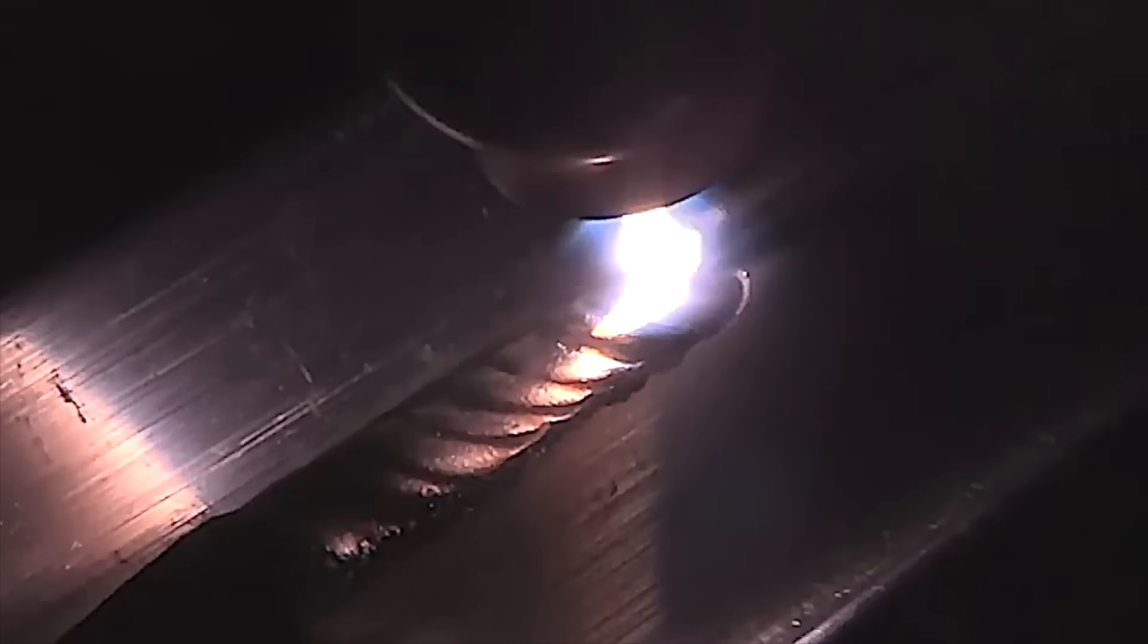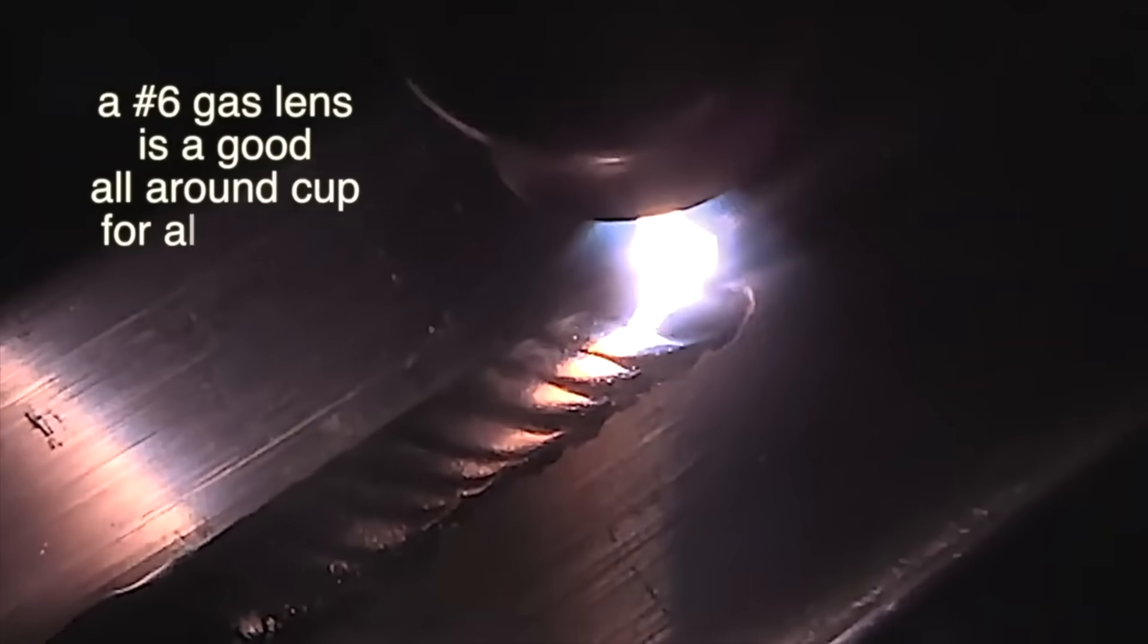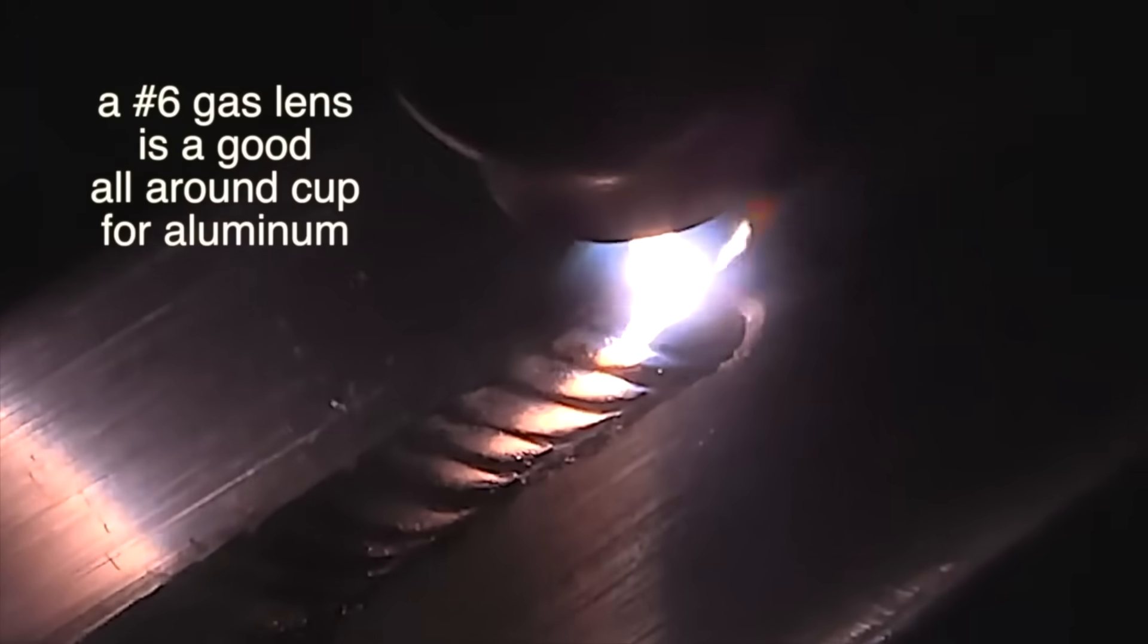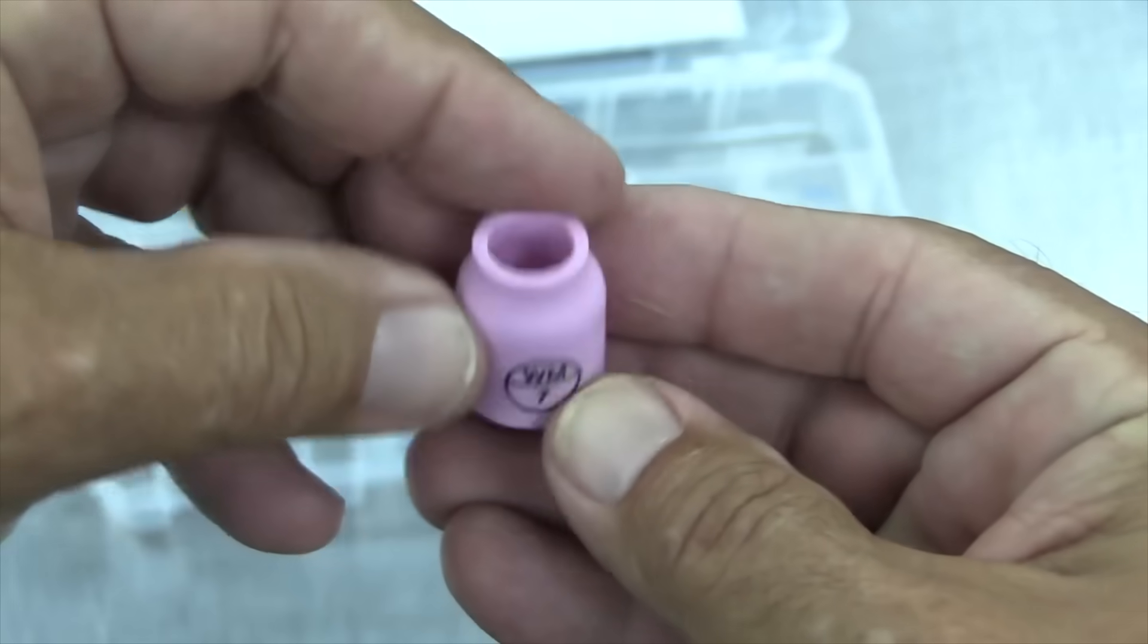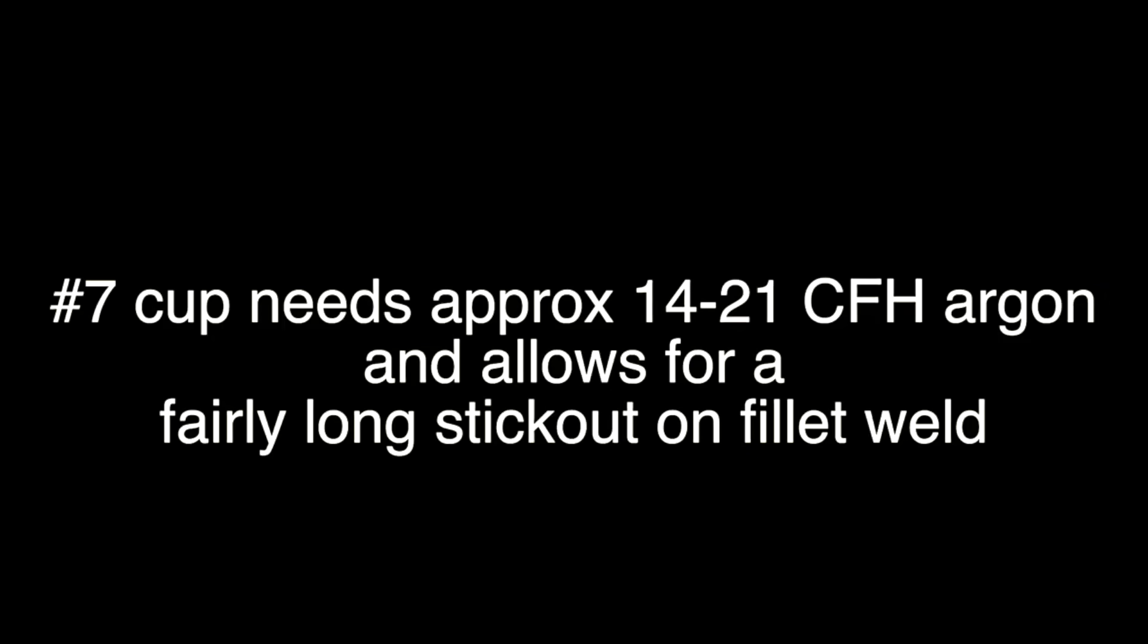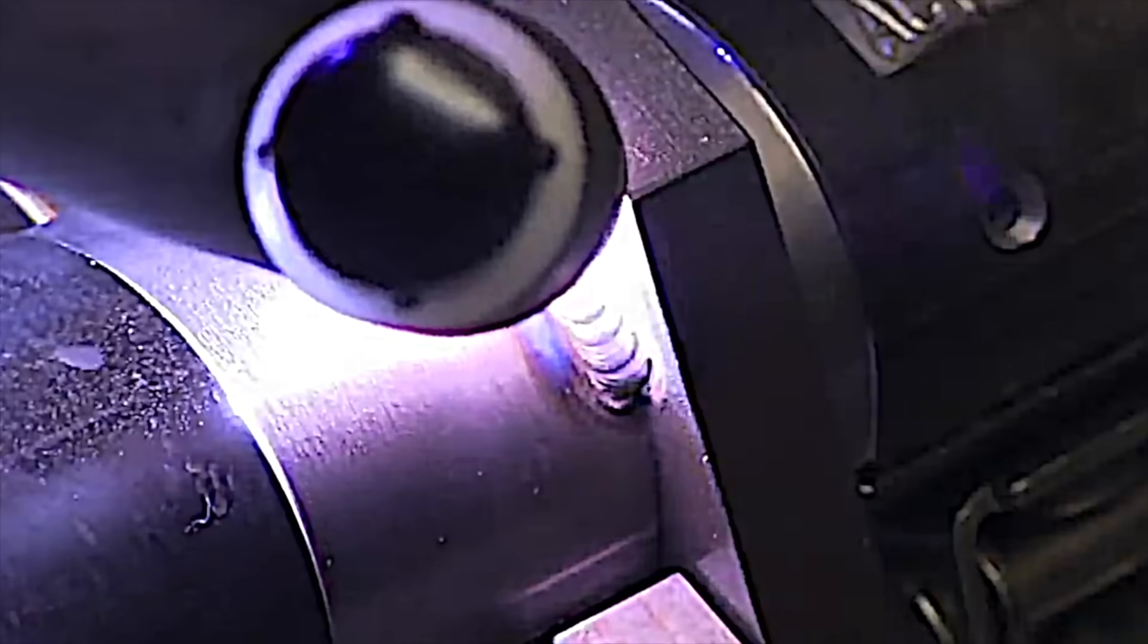A number six is also a really good all-around cup for aluminum. This is an outside corner joint on eighth inch thick material. If you need a little longer stick out then you can get with the six, take it up to a number seven. Just increase the argon flow about two and a half CFH per cup size, gets you right in the ballpark usually.